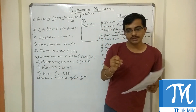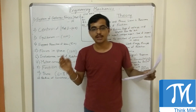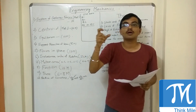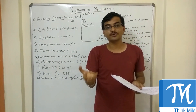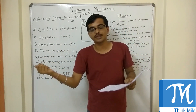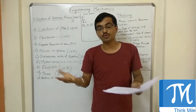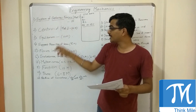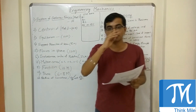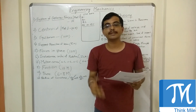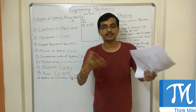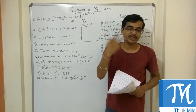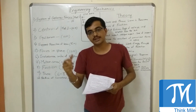Then, friction. Some students find it a bit difficult, but again it is a very simple chapter — the same as coplanar forces and equilibrium. In this case, there is only a frictional force added: where the block is moving, the frictional force will be in the opposite direction. Other concepts are the same as equilibrium. Check out solved examples of friction, analyze how the method works, try to remember the approach and then solve. Two questions on friction can be expected — one in question number one and one in questions two through six.